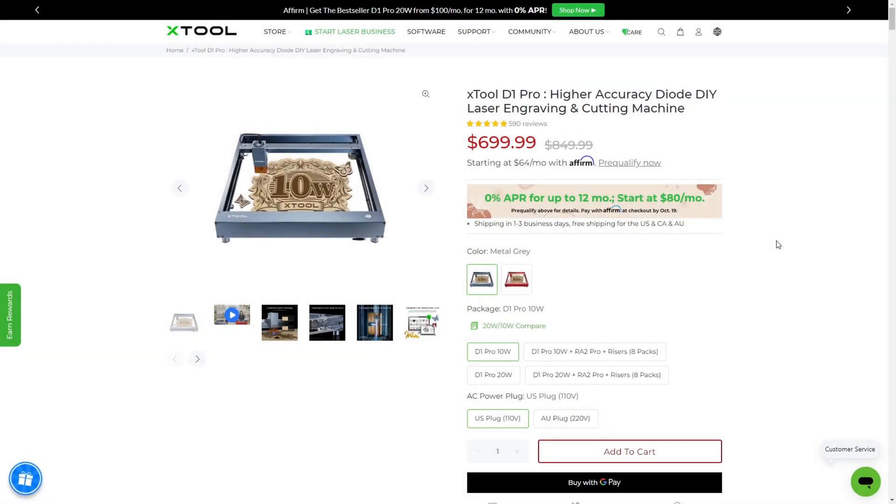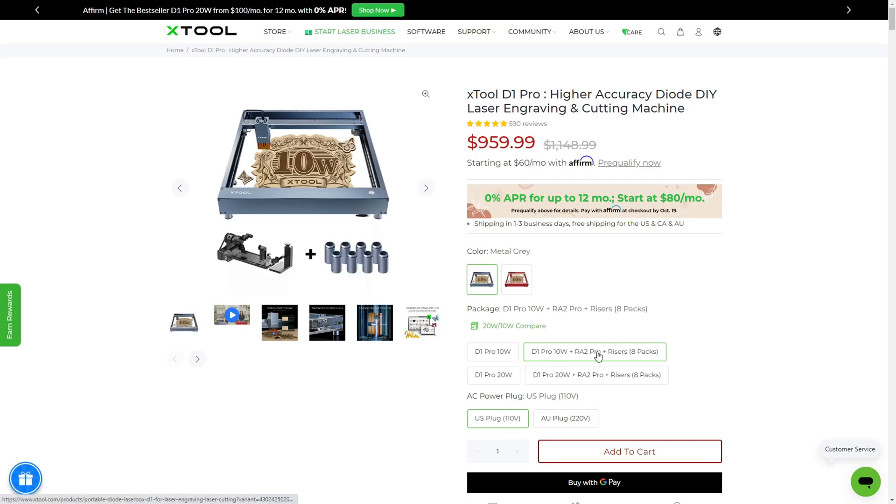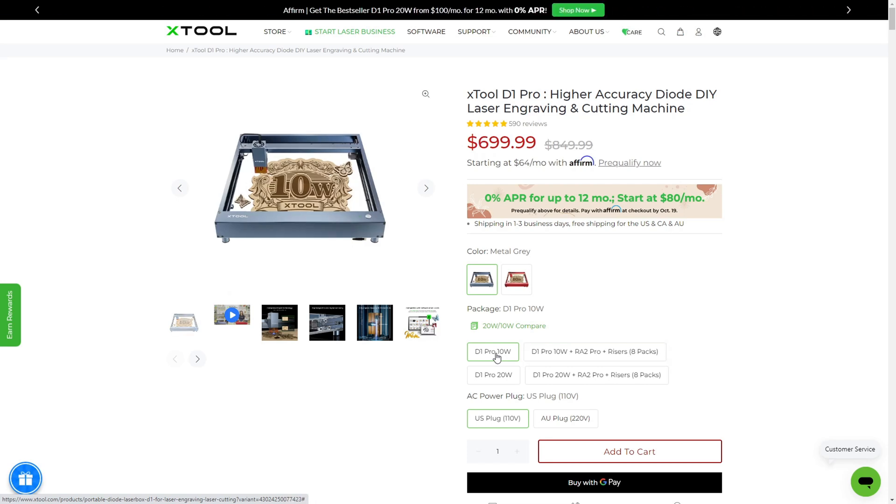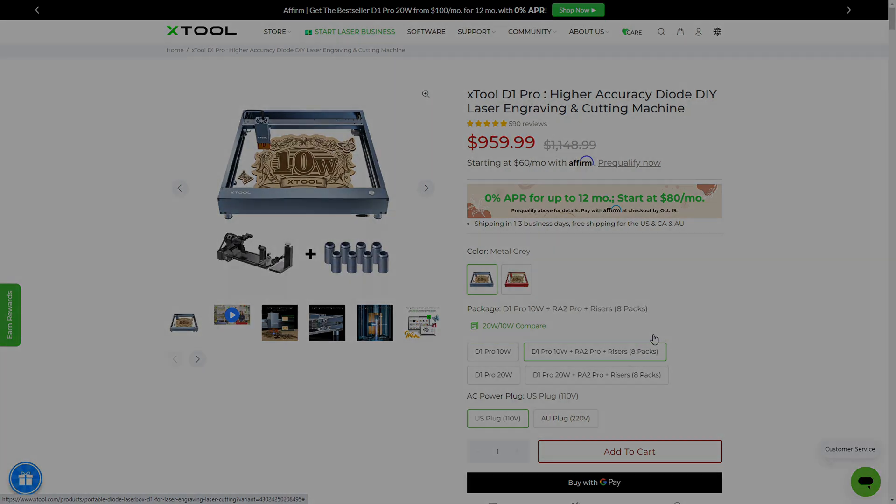The D1 Pro 10W version currently sells for $699 USD, with the bundle with the rotary attachment and the risers will cost an extra $260 for a total bundle price of $959 USD. At a base price of $700, this is one of the more premium 10W laser engravers on the market, but I think that it would be a good choice for those looking for those premium features.